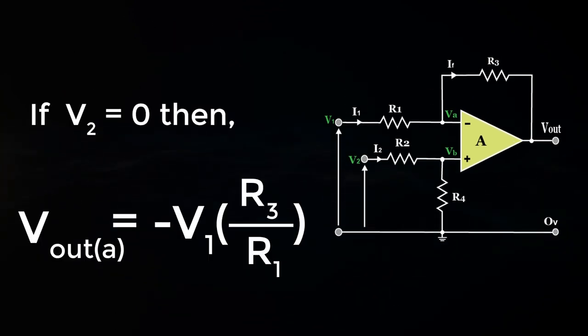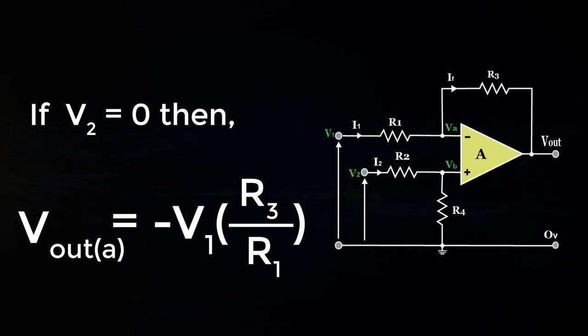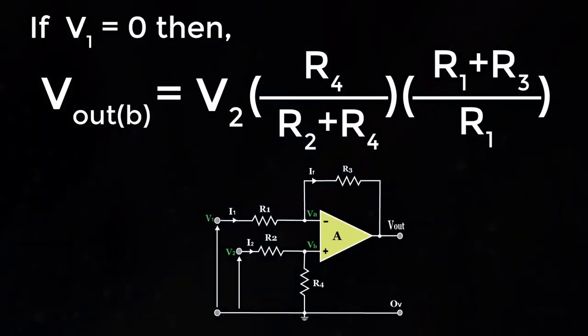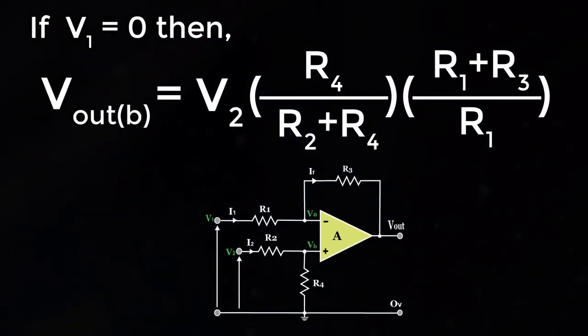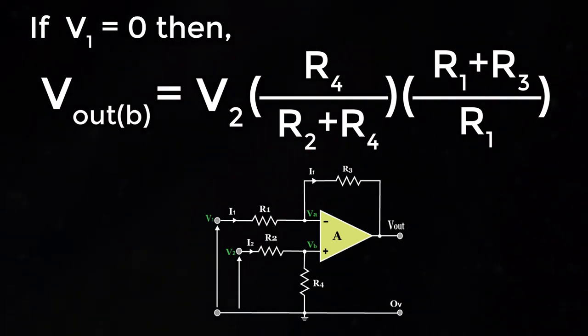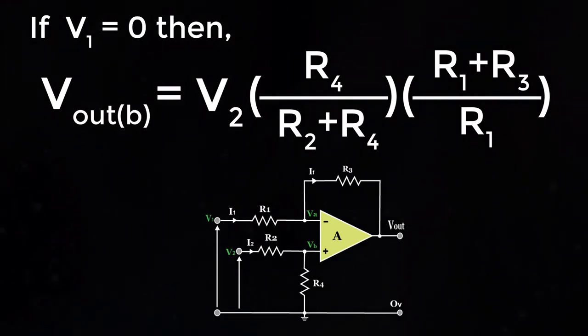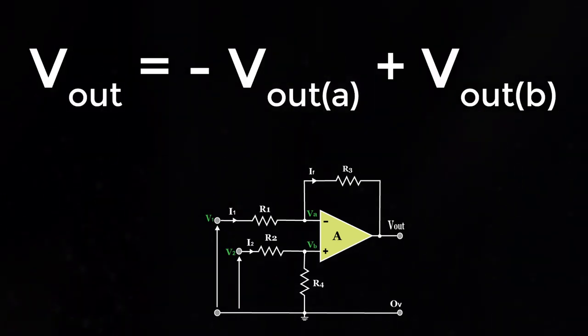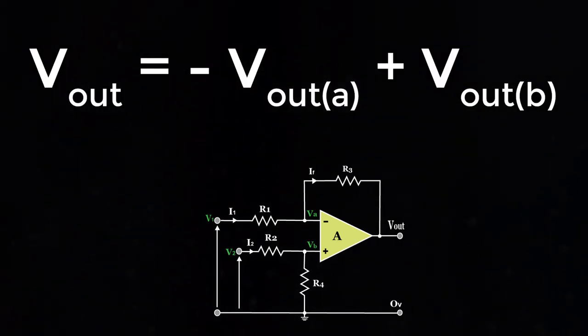If V2 is equal to 0, then Vout A is equal to minus V1 into R1 plus R3 by R1. Vout equals minus Vout A plus Vout B.